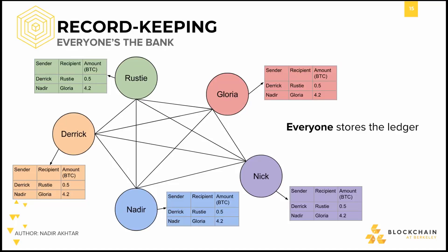We know that we want each person to store the ledger, but what should that database actually look like? What data structures hold the transaction history? We might naively decide to store every transaction individually, but for a network that may be dealing with many transactions per second, updating the database for every received transaction will be costly, especially since this update would have to be delivered to everyone in the network. Everyone maintains their own ledger after all, and once a change is made for one entity, it must propagate throughout the entire network. So how do we store our ledger efficiently?